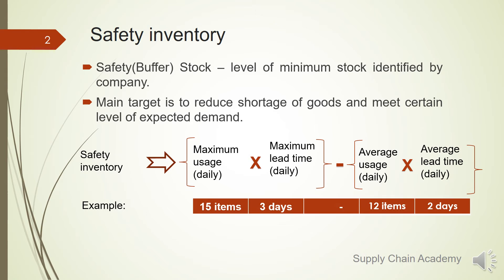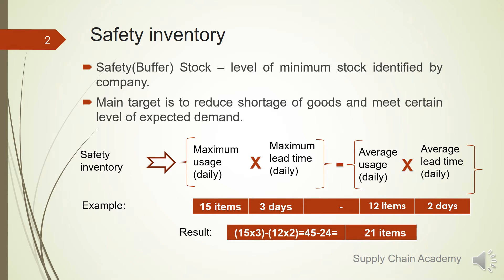For example: we have 15 items maximum used daily based on historical statistics, and the maximum lead time is 3 days. The average daily usage is 12 items and average lead time is 2 days. In this case, the safety stock is 21 items to be kept by the company.